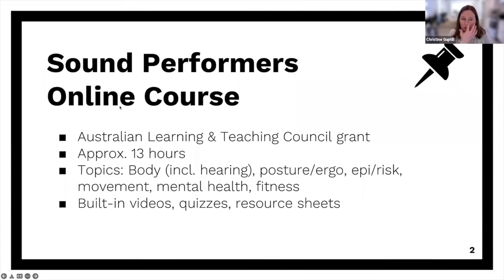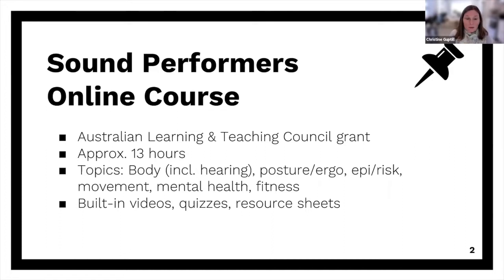The Sound Performers online course was developed with support from the Australian Learning and Teaching Council grant. It takes about 13 hours to complete and covers a variety of topics: the body including hearing, posture and ergonomics, epidemiology and risk, movement, mental health, and fitness. There are built-in video clips, quizzes, and resource sheets, and it's delivered on the Moodle platform. You can register for it by googling Sound Performers — it's about $50 Australian for individuals, and around $1,200 for an institutional subscription, which is quite a bargain for a larger university.